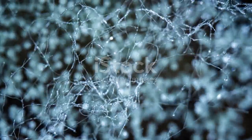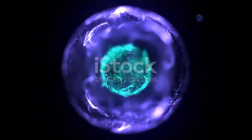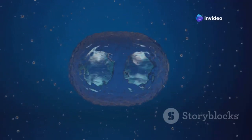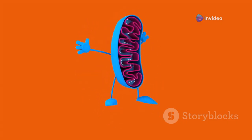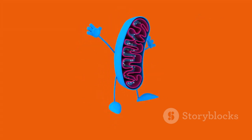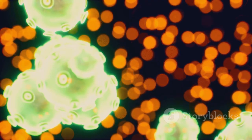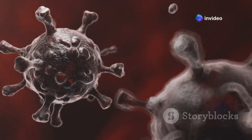Let's dive into the cytoplasm, the jelly-like substance that fills the cell and surrounds all those amazing organelles. The cytoplasm is a bustling hub of activity where many essential cellular processes take place. From protein synthesis to energy production, the cytoplasm is where the action is. Remember that it's not just empty space — it's filled with this dynamic and essential substance.